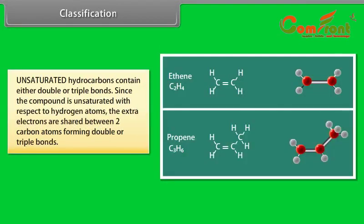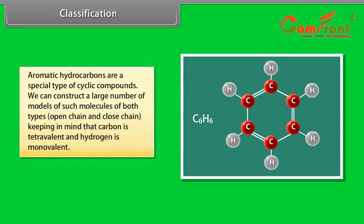Unsaturated hydrocarbons contain either double or triple bonds. Since the compound is unsaturated with respect to hydrogen atoms, the extra electrons are shared between two carbon atoms forming double or triple bonds. Aromatic hydrocarbons are a special type of cyclic compounds. We can construct a large number of models of such molecules of both types — open chain and closed chain — keeping in mind that carbon is tetravalent and hydrogen is monovalent.